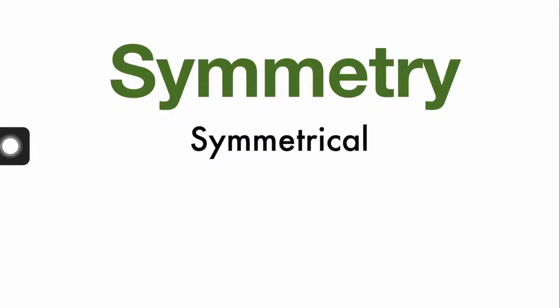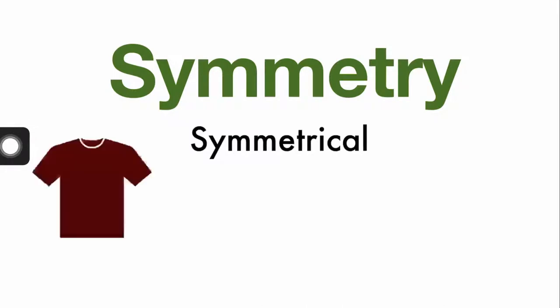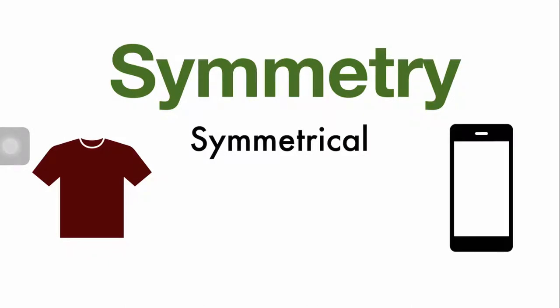Hello everyone, today we are going to tackle questions on the topic of symmetry to help you score that one mark for PSLE. We describe something as symmetrical when we can divide the item into two parts that match. Look at this shirt and look at the phone. When we draw the line down, the left and the right matches when folded. So the line that is in red is what we call the line of symmetry.